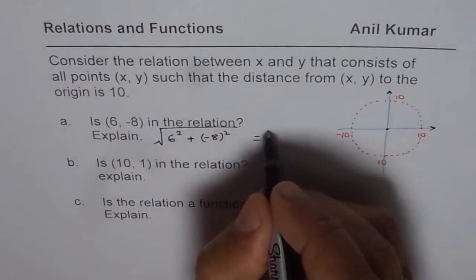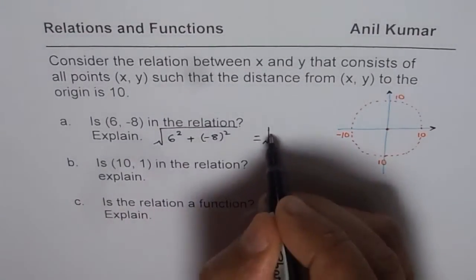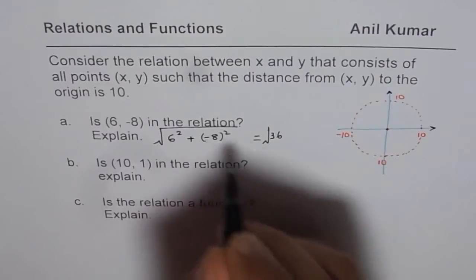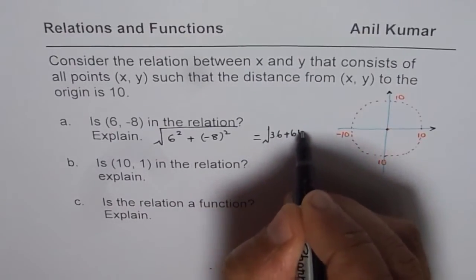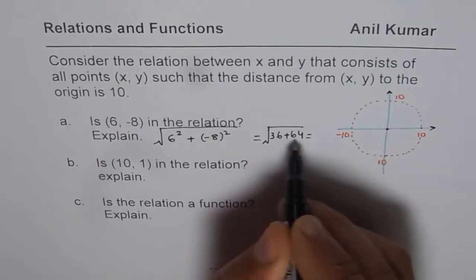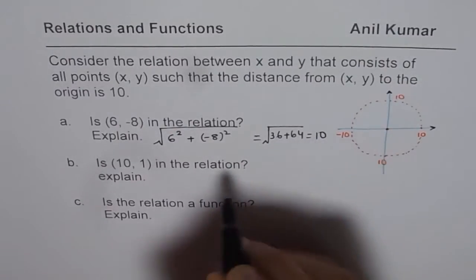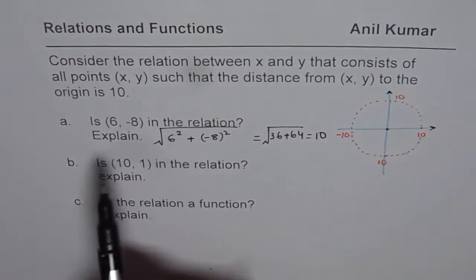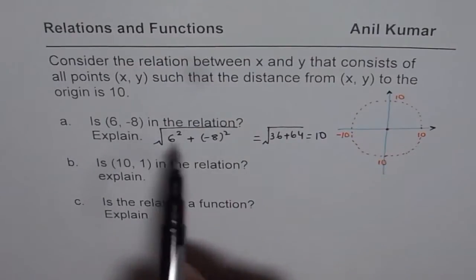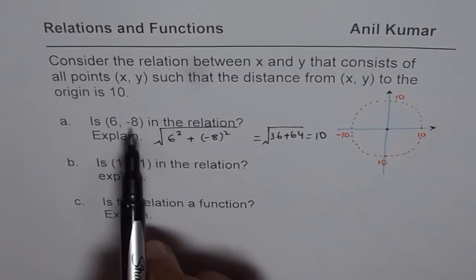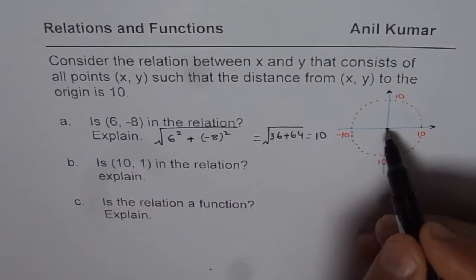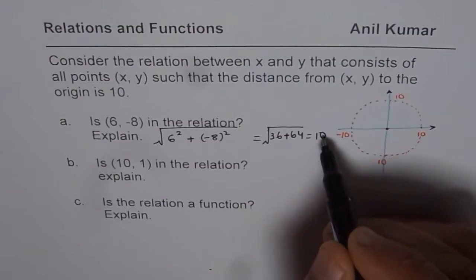Which is square root of 6² is 36, (-8)² is plus 64, and that gives you 100, and square root of 100 is indeed 10. We find that (6, -8) is in the relation since the distance of this coordinate point from the origin is 10.